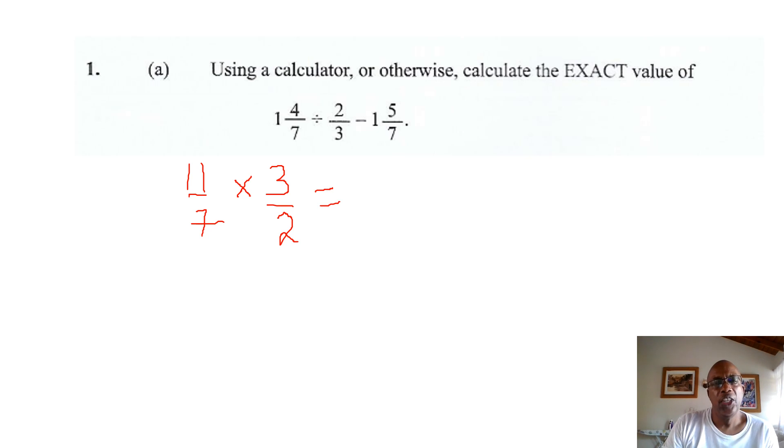To find the answer, since we cannot cancel out any terms in the numerator and denominator, we simply multiply the numerators. 11 times 3 and that is 33 over 7 times 2 and that is 14. So, after we have divided the first two fractions, we have 33 over 14 as the answer.